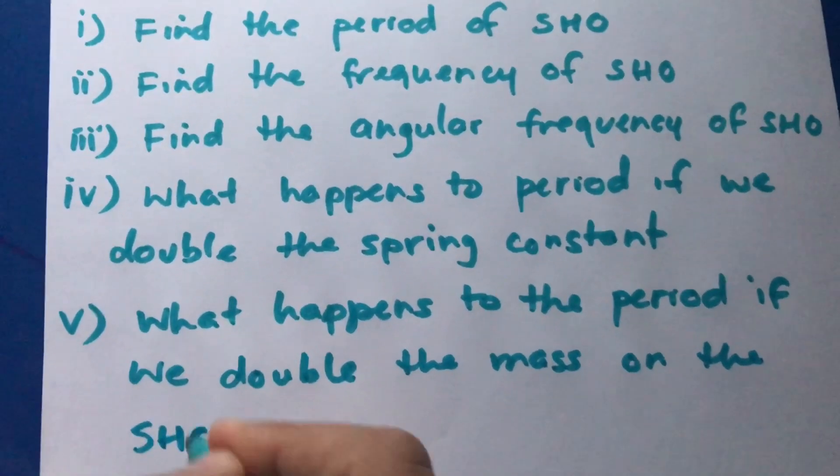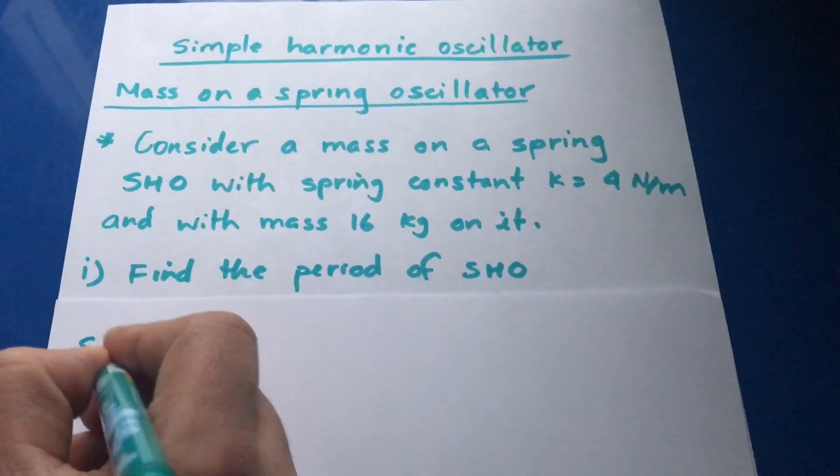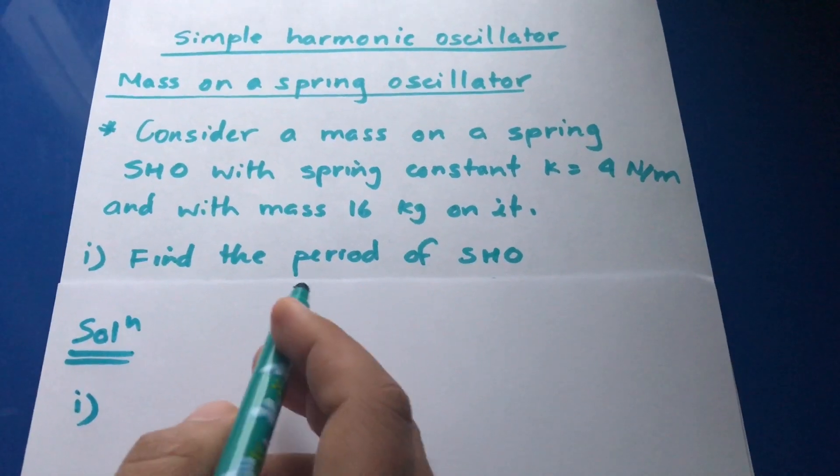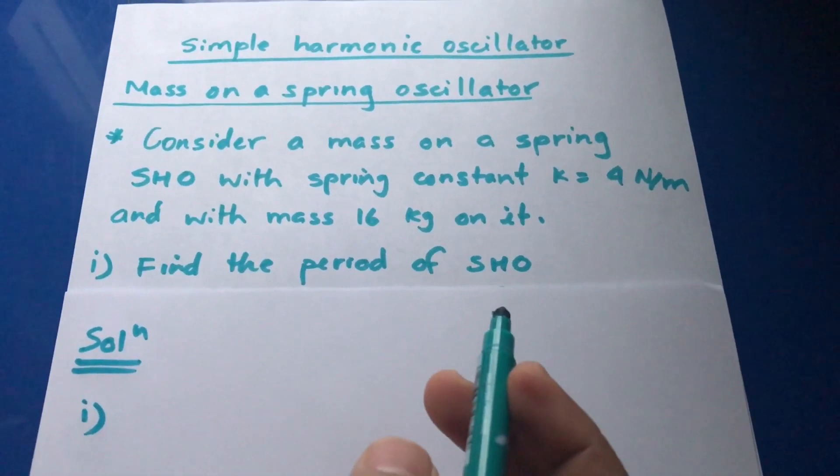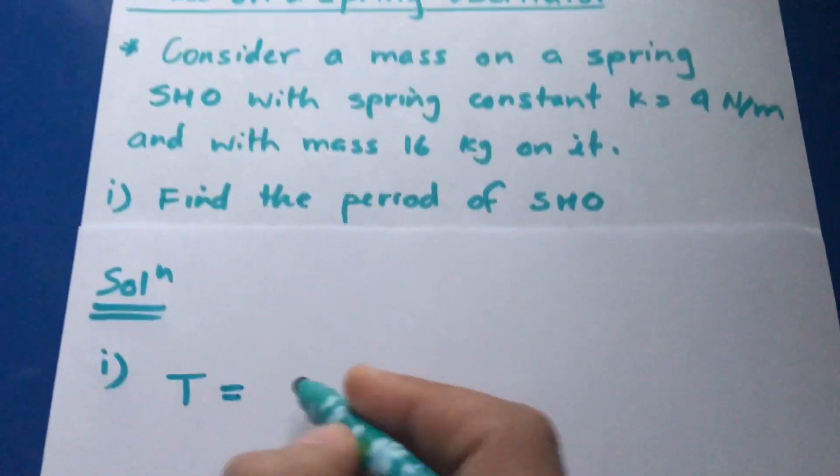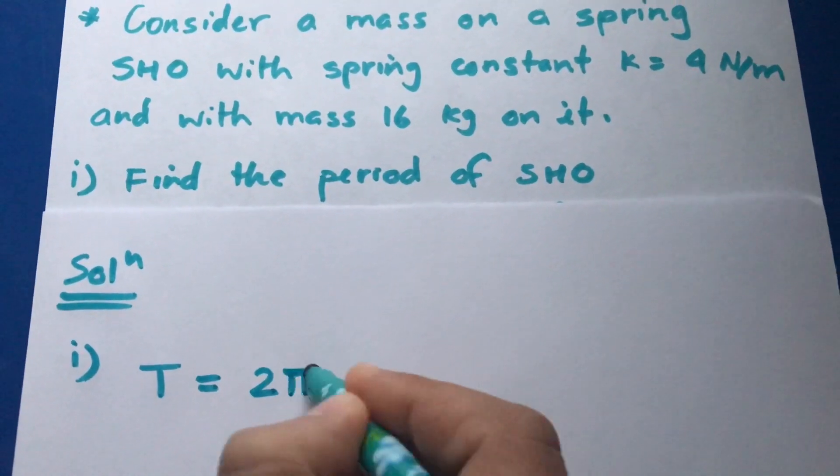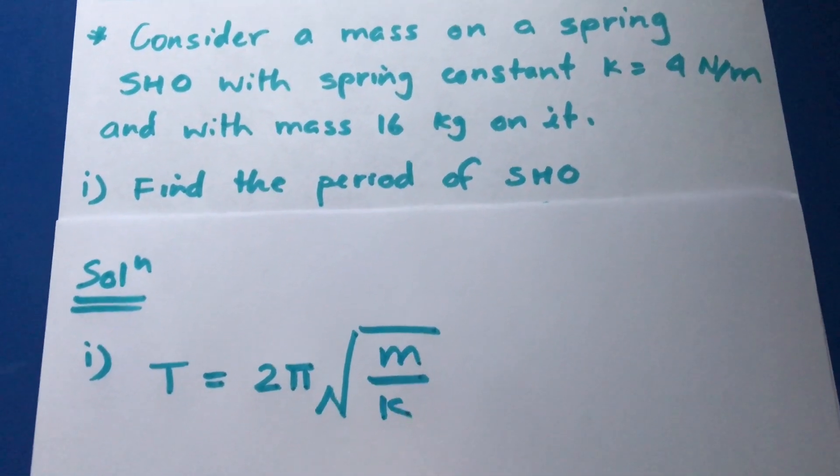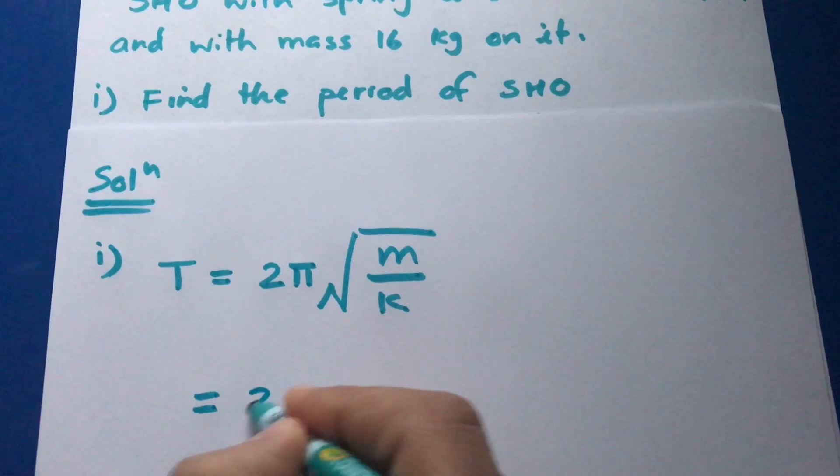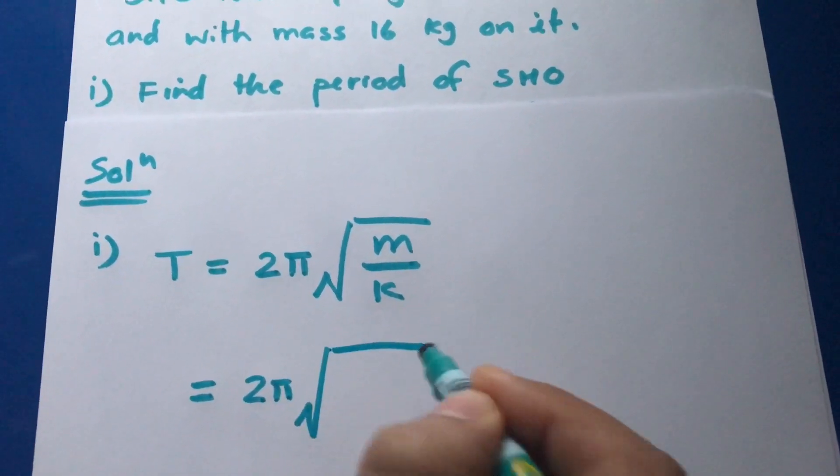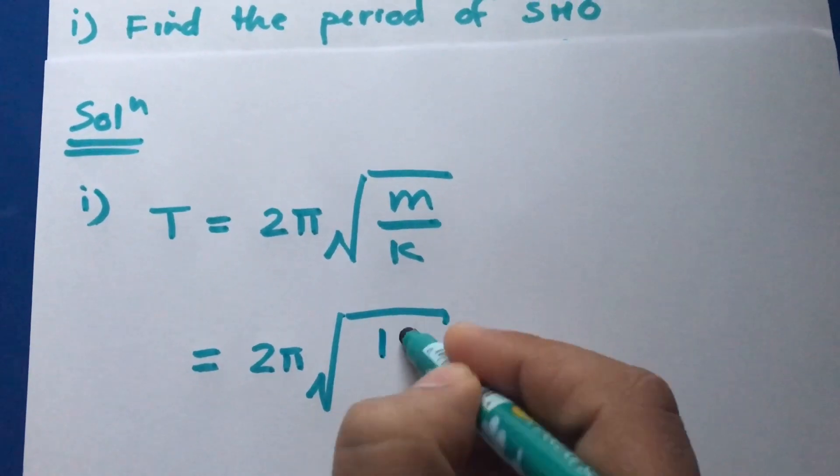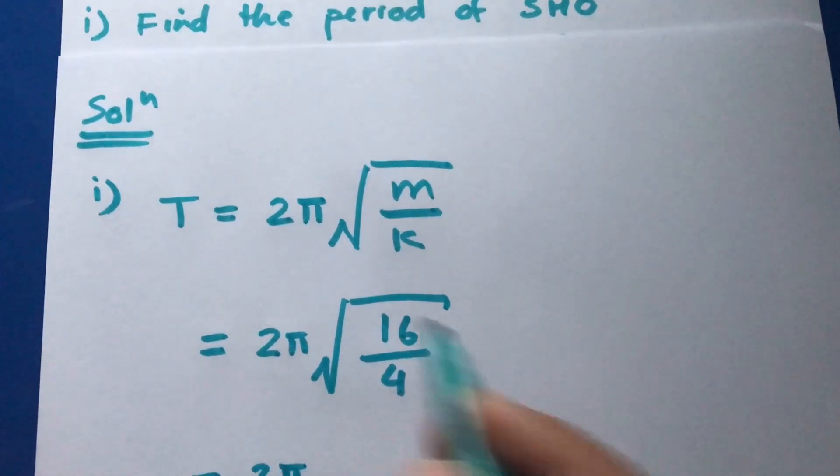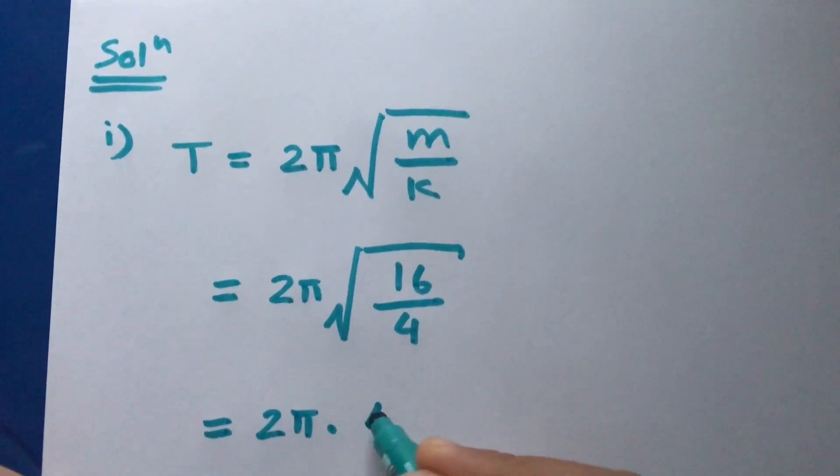Let's focus on the first part of the problem. We have to calculate the time period of SHO. The time period for simple harmonic oscillator is given by T equals 2π times the square root of m over k. In our case, it's 2π times the square root of 16 over 4, so that's 2π times the square root of 4, which equals 4π, and this is actually 12.56 seconds.